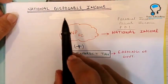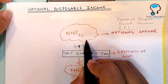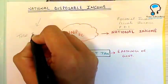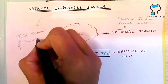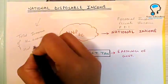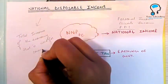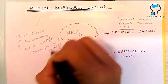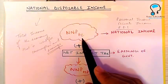In this video we are going to learn how to calculate national disposable income from national income. National disposable income is the total income of the economy that is used for consumption and savings.